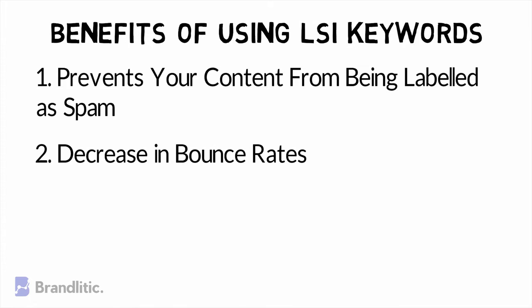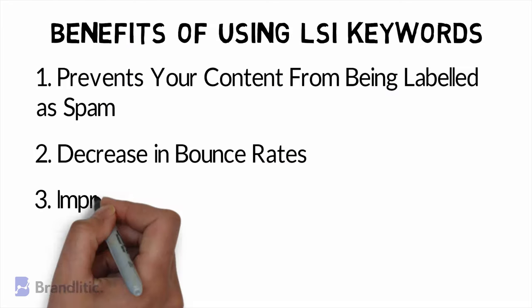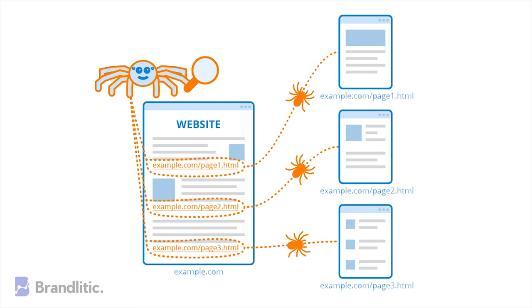Second, decrease in bounce rates. LSI keywords help you reduce bounce rates by preventing your site from being ranked on wrong terms — for example, a definition of 'notebook' showing up for searches from the movie The Notebook. Third, it improves search engine rankings, as Google bots automatically crawl your site and form a perception about what your article means, helping them include related keywords in your search copy.